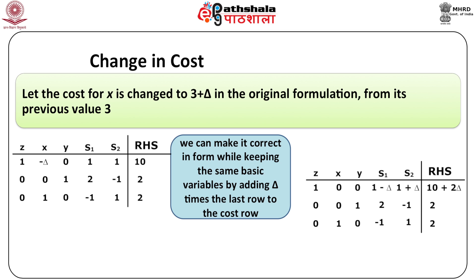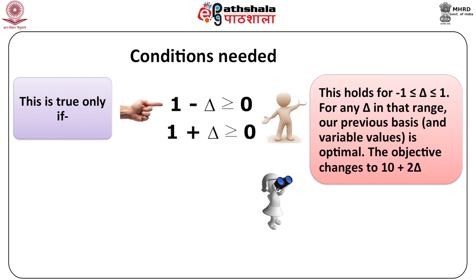This gives the tableau which again has been indicated. Note that this tableau has the same basic variables and the same variable values except for z that our previous solution had. Does this represent an optimal solution? It does only if the cost row is all non-negative. This is true only if 1 minus delta is greater than or equal to 0 and 1 plus delta is greater than or equal to 0. This holds for delta lying between minus 1 and 1. For any delta in that range, our previous basis and variable values are optimal, and the objective changes to 10 plus 2 delta.